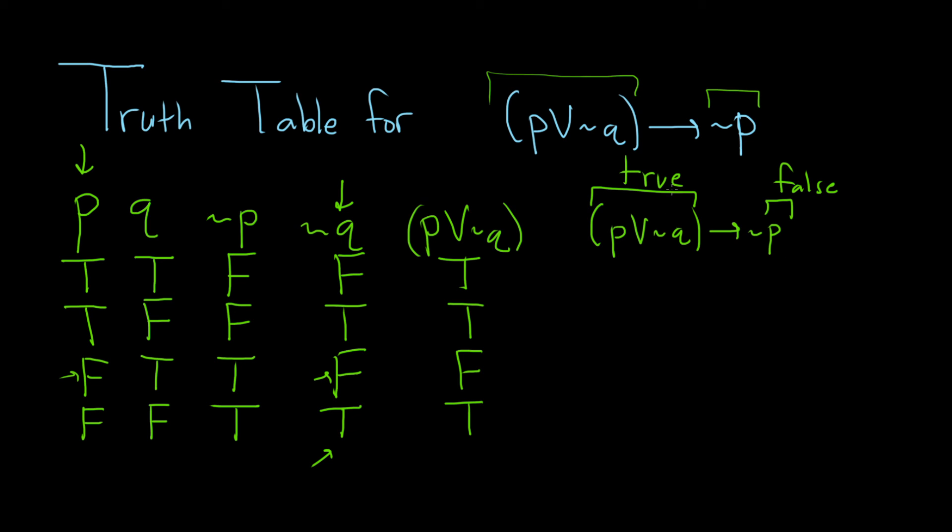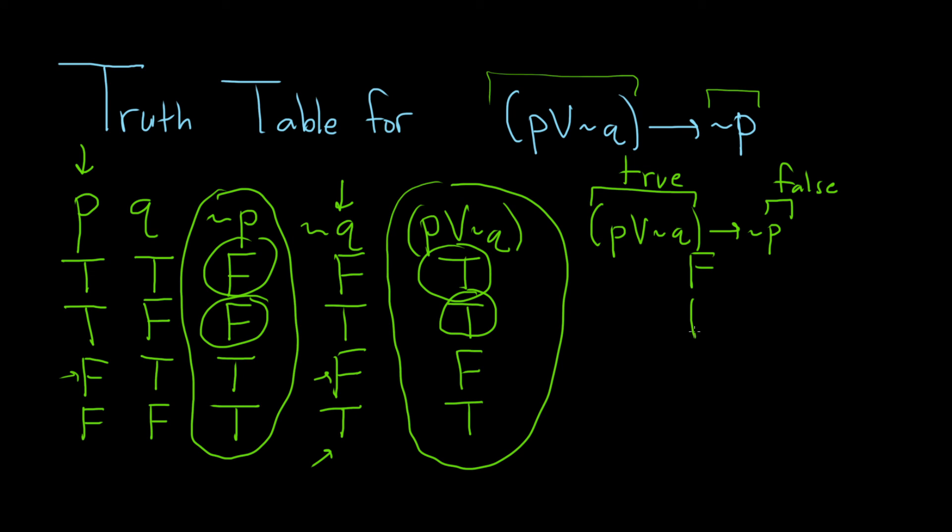So let's see if we can find the cases where the first part is true and the second part is false. So we're looking here and also here. And so you see it's true false. That's the case where it's false. The first part is true. The second part is false. Again true false. It's the case where it's false. And then this is not the case where it's false. It's false true, true, true. So all other cases it's true. Again, it's only false when the first part is true and the second part is false.